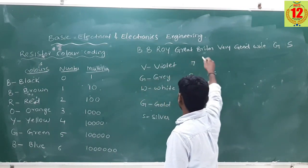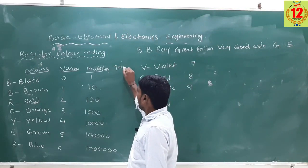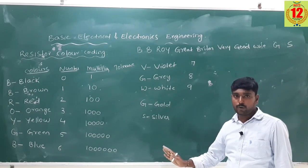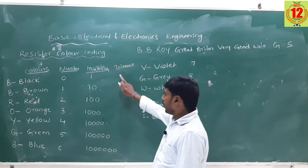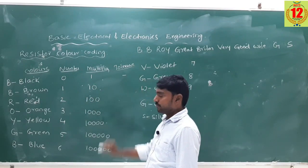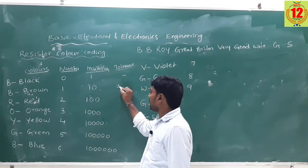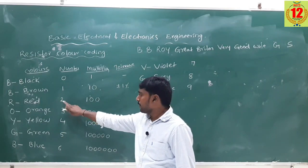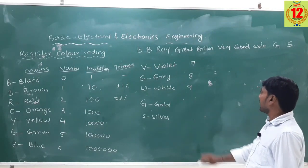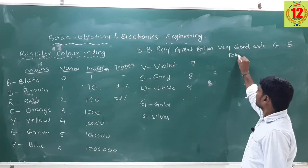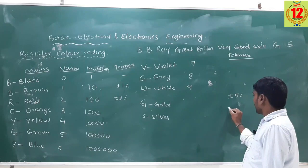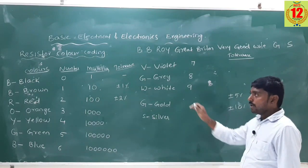Next, tolerance. Black number is 0 — no tolerance. Brown number is 1 — tolerance is plus or minus 1%. Red tolerance — number is 2 — tolerance is plus or minus 2%. Silver tolerance is plus or minus 10%. This is the table for the resistance color coding.